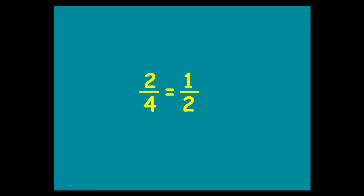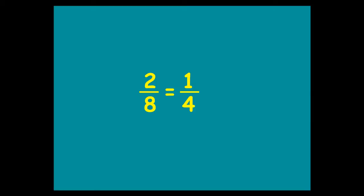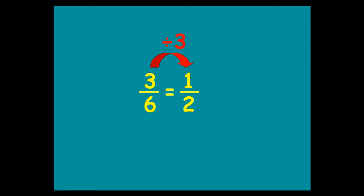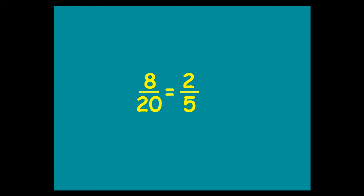To simplify a fraction, all you want to do is ask yourself what goes into the numerator and the denominator. For example, 2 quarters — you could divide top and bottom by 2, and you'd end up with 1 half. 2 eighths — you would divide top and bottom by 2 again, and you get 1 quarter. 3 sixths — divide top and bottom by 3, because 3 and 6 are both divisible by 3, and you get your fraction in its simplest form. You can't go any simpler than a half — there's nothing that goes into 1 and 2 except 1, which won't change anything. To go from 8 twentieths to 2 fifths, you divide top and bottom by 4, and that takes you to the fraction in its simplest form.